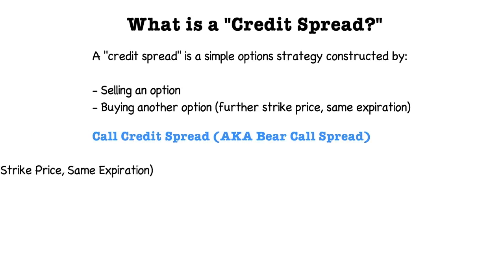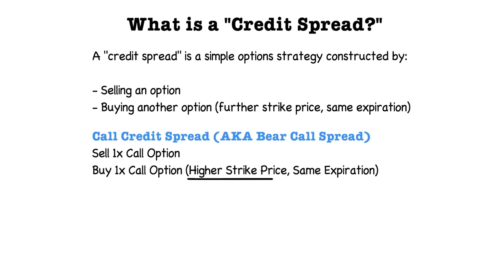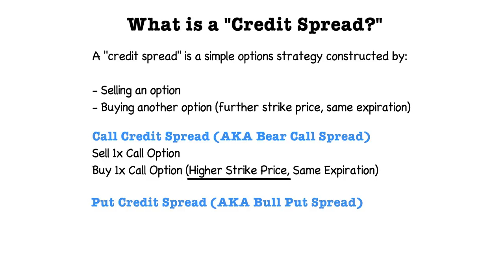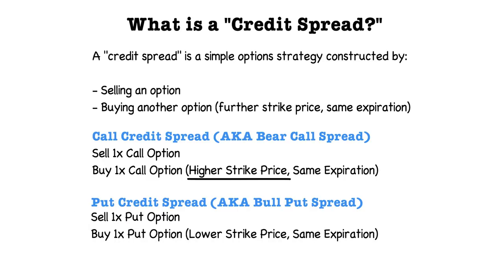A credit spread can be used with call options or put options. When it's used with call options, it's called a call credit spread or sometimes a bear call spread, since it's a bearish position. This strategy is constructed by selling one call option and buying another call option at a higher strike price in the same expiration cycle. If the credit spread is constructed with all put options, it's sometimes called a bull put spread, and it's constructed by selling one put option and buying another put option at a lower strike price in the same expiration cycle.